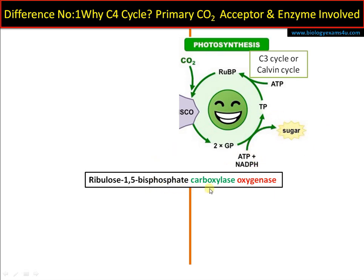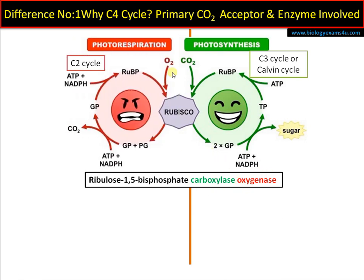RuBisCO also has an oxygenase activity. If the concentration of oxygen is high, RuBisCO will bind to oxygen rather than carbon dioxide. On binding of oxygen, RuBisCO forms 2-phosphoglycolate, so the first stable compound is 2-phosphoglycolate — therefore called the C2 cycle. To regenerate this 2-phosphoglycolate, a great amount of ATP and NADPH synthesized in the light-dependent reaction is used.